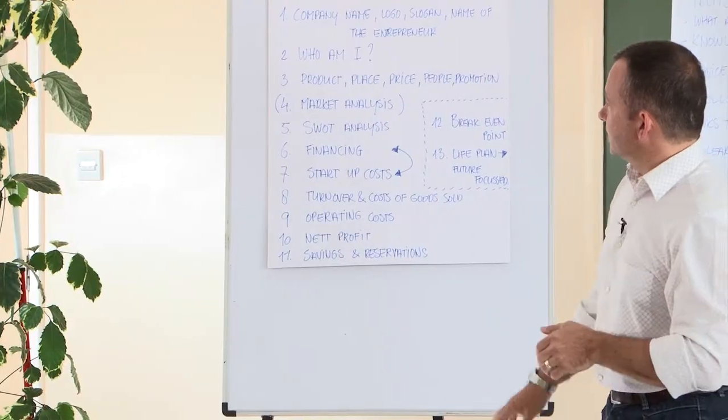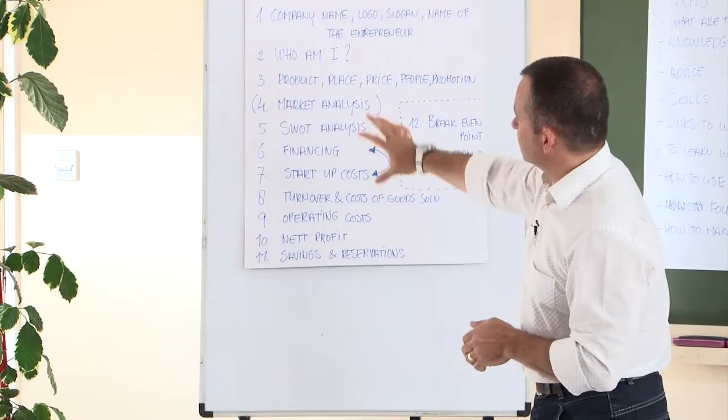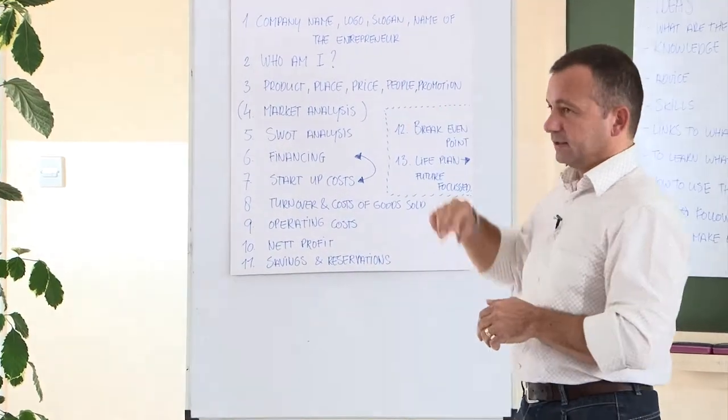You could end with the life plan, as we call it, which is future focused. That means: okay, this is my plan, this is what I'm going to do, what I'm planning to do, and how my future would look like. So it's future focused, based on the goals you set. So this could be the content of your business plan.